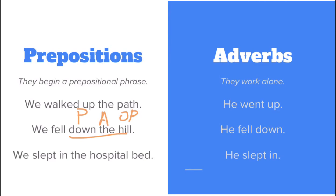If we go over to the adverb side, it says: he fell down. Since adverbs work on their own, 'down' is the adverb. It's telling us where he fell, but there is no prepositional phrase — it's not there. So we know that 'down' is an adverb.